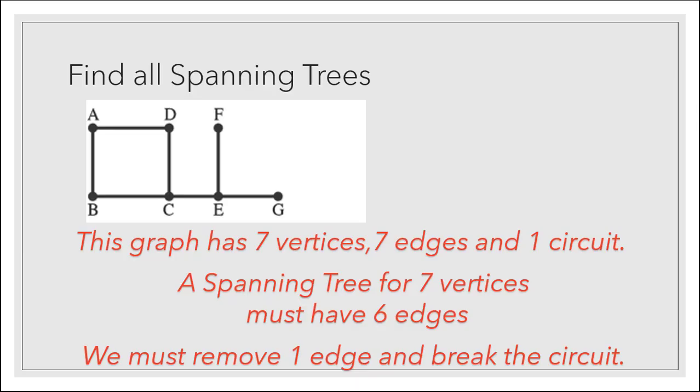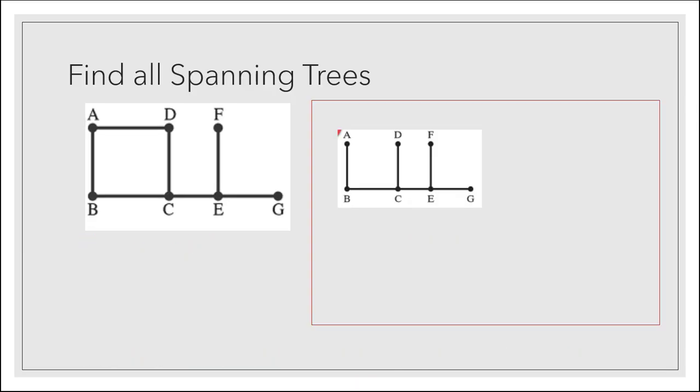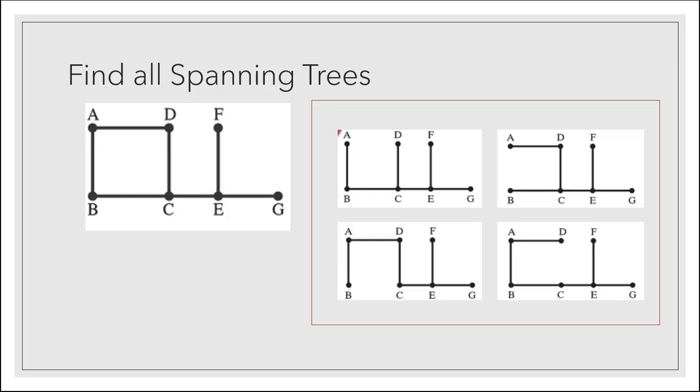And there are four edges we can remove. I could remove AD and get this spanning tree. I could remove AB and get this spanning tree or BC or CD. In all of these cases, we've included all of the original vertices and we have no circuits, so we have a spanning tree.